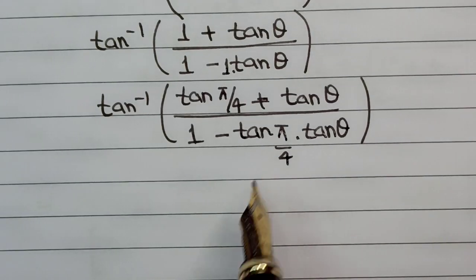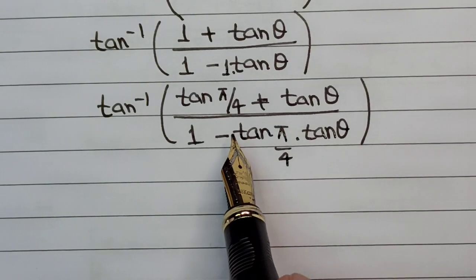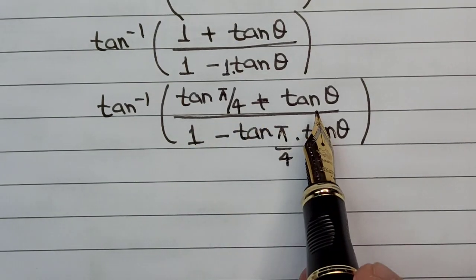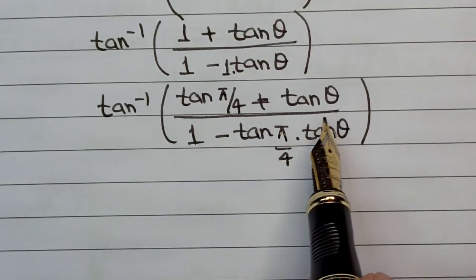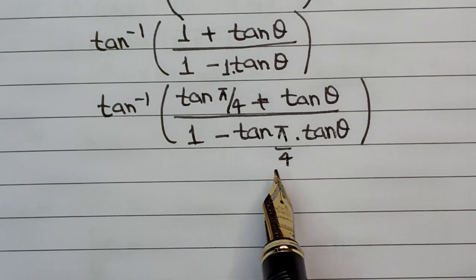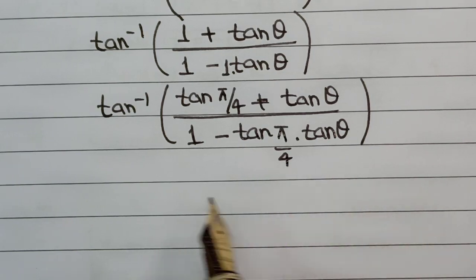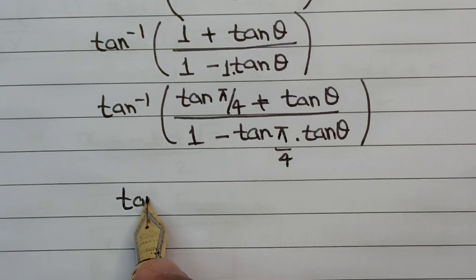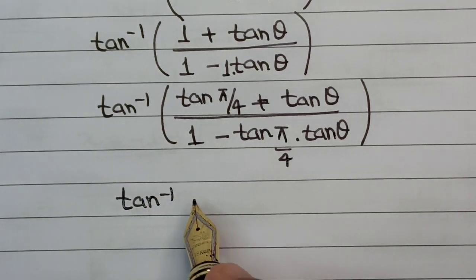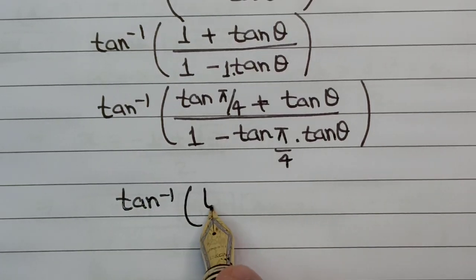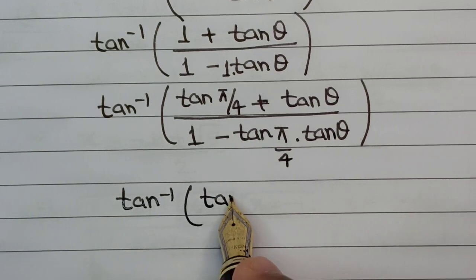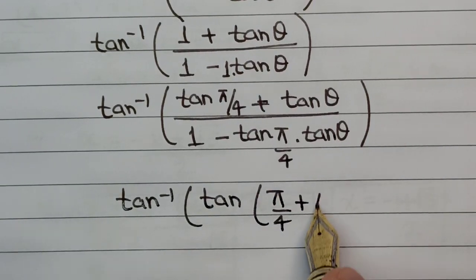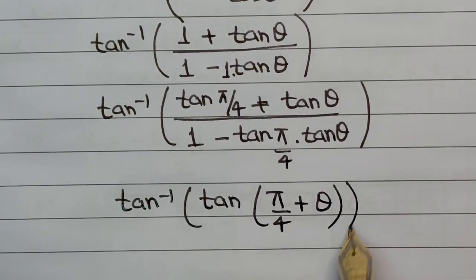This is now the standard formula for tan(A + B) = (tan A + tan B)/(1 − tan A · tan B), which gives us tan inverse of tan(π/4 + θ).